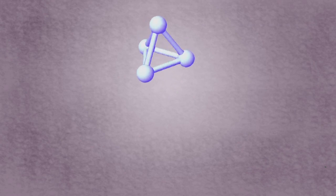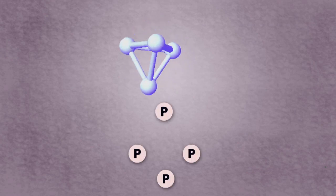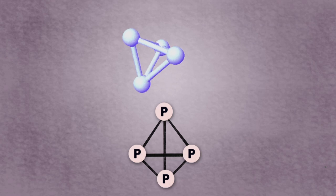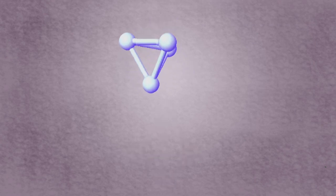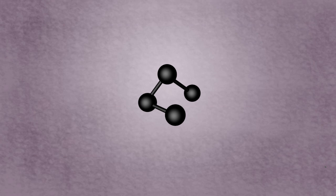White phosphorus consists of four phosphorus atoms held together in a tetrahedral arrangement. Some other allotropes of phosphorus also exist: black phosphorus and violet phosphorus.